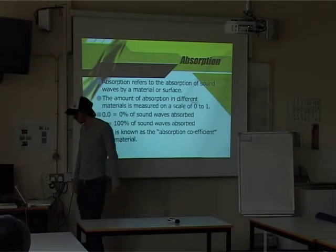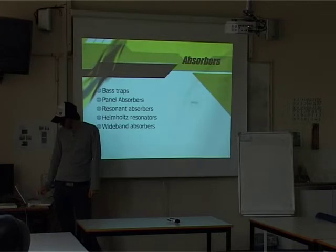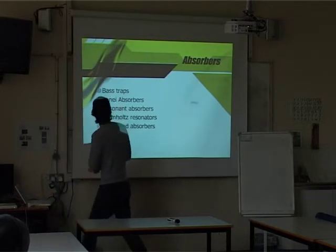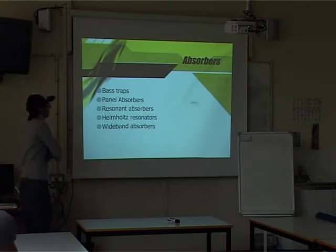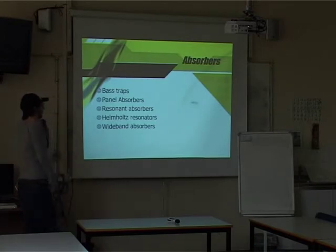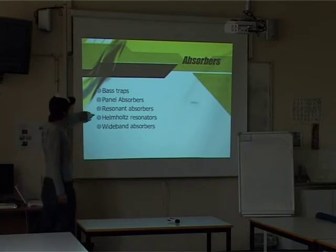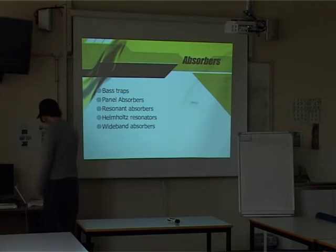This is known as the absorption coefficient. It's usually noted down across about six frequencies along the range on a chart. The main types of absorbers are bass traps — which are basically panel absorbers specifically designed for bass frequencies, most often placed in corners — panel absorbers, resonant absorbers, Helmholtz resonators, which are another version of resonant absorbers, and wideband absorbers, which are a combination of resonant absorbers.